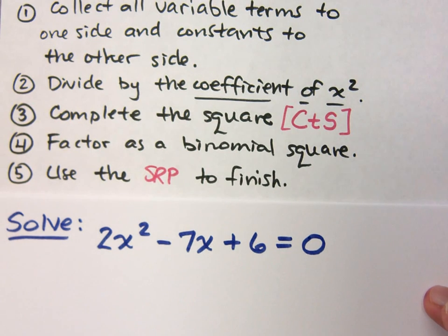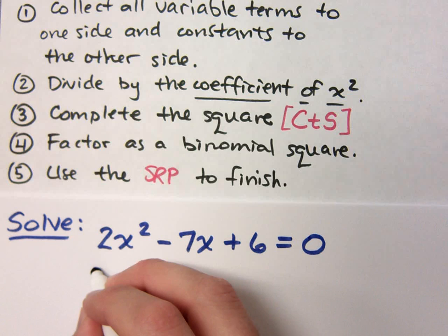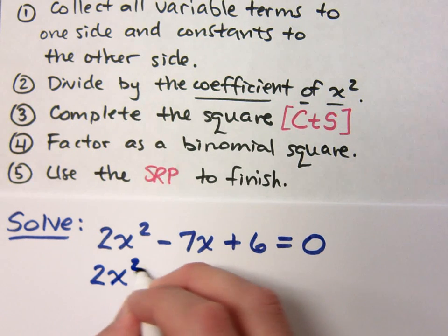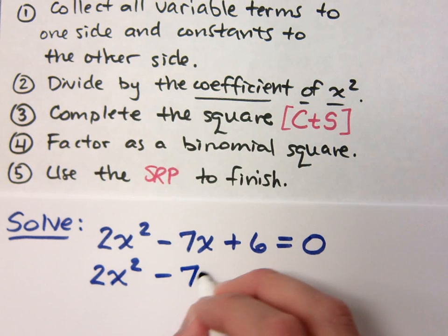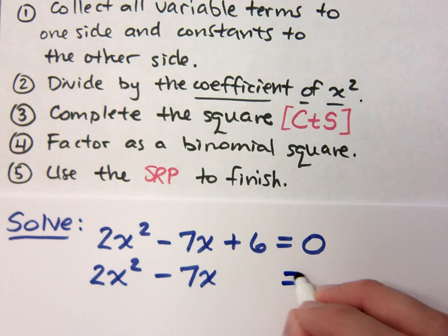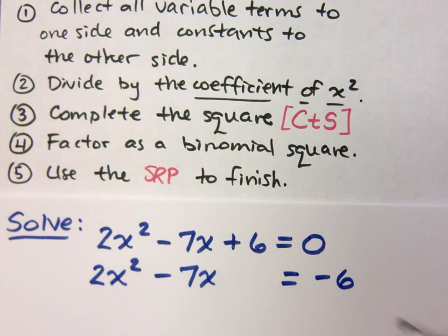Let's do another example of completing the square. 2x squared minus 7x plus 6. According to the steps, the first step is to do what? Move the 6 over. So I have 2x squared minus 7x is equal to negative 6.